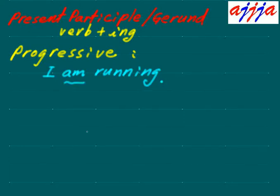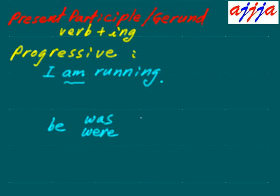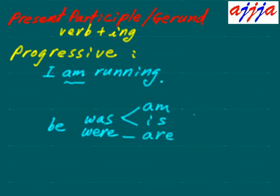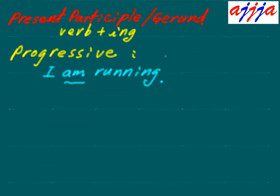This progressive form — you must have a be verb. Be verb: the infinitive form is 'be,' the past forms are 'was' and 'were,' and the present forms are 'am,' 'is,' and 'are.' The present participle of 'be' is 'being.' So the formula for progressive is: be verb plus verb -ing.